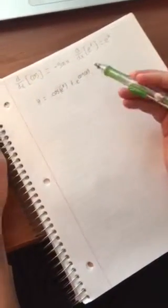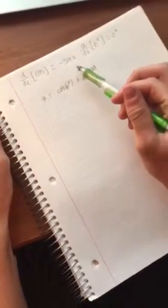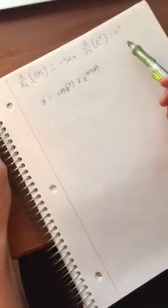So, take the derivative of this, and the equations we will need today are the derivative of cosine, which is negative sine, and the derivative of e to the x, just e to the x.